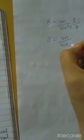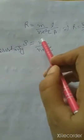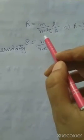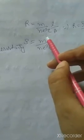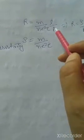We studied the formula R = ML/(NE²τA), where M upon NE²τ is your resistivity. So R = ρL/A. Here M is the mass of the electron, N is the free electron density — the number of electrons per unit volume — E is the electronic charge, τ is the average relaxation time, L is the length of the conductor, and A is the area.